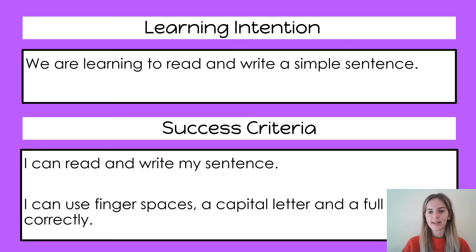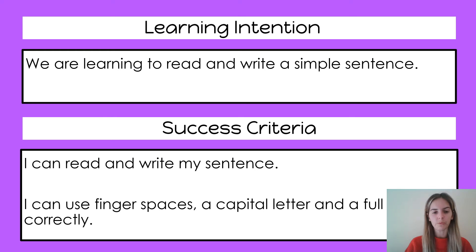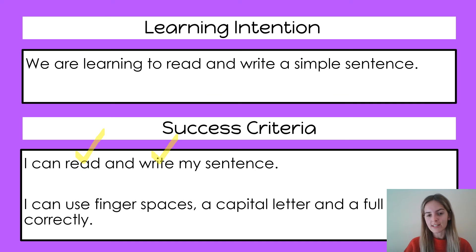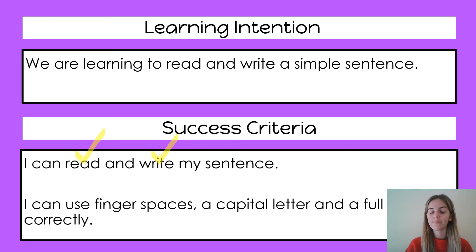Now that we have completed our activity, we are going to go back to our learning intention to make sure that we have done everything we needed to do in our lesson today. Our learning intention was: we are learning to read and write a simple sentence. Looking at our success criteria, the first one was I can read and write my sentence. I'm going to tick off 'read my sentence' because we did that at the beginning of our lesson and also at the end when we were completing our writing activity. And I'm going to tick off 'write my sentence' because we just did that when we wrote it with our neatest handwriting. Then looking at our second success criteria: I can use finger spaces, a capital letter and a full stop correctly.